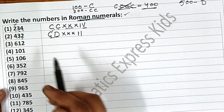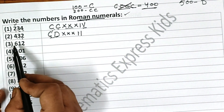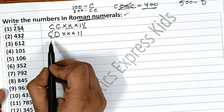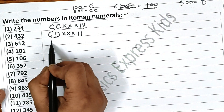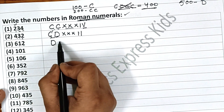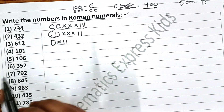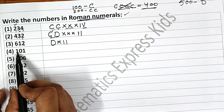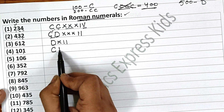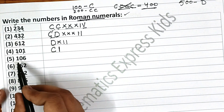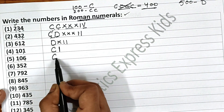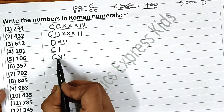Now come to the next one, that is 612. Before writing 600, you must know 500, and 500 is D. So 600 is DC, and now 12 is X and II — that is 10 and 2. Now 101: 100 is C and 1 is I, so CI. And 106: 100, then 5 and 1 gives 6 — so CVI.